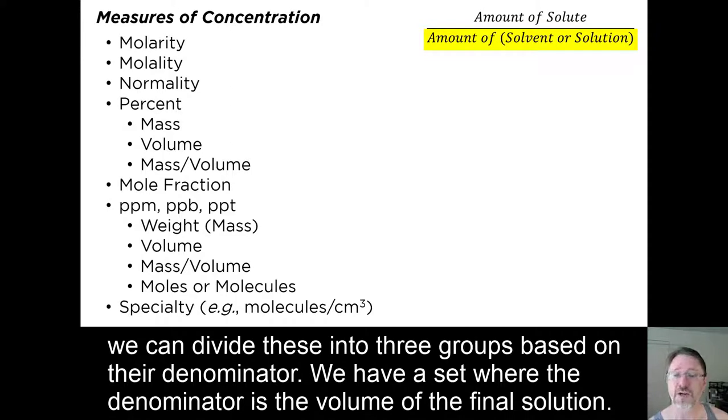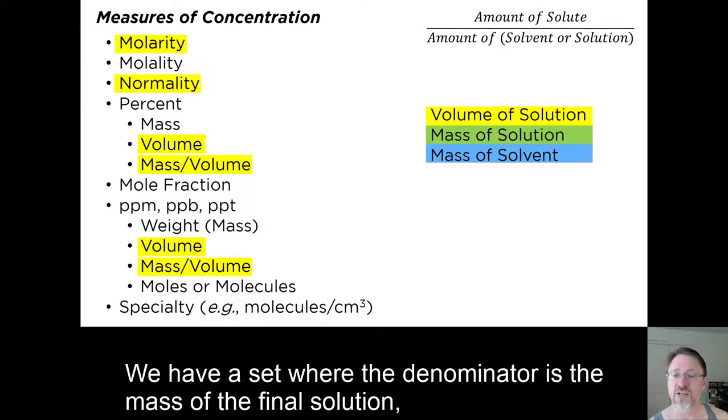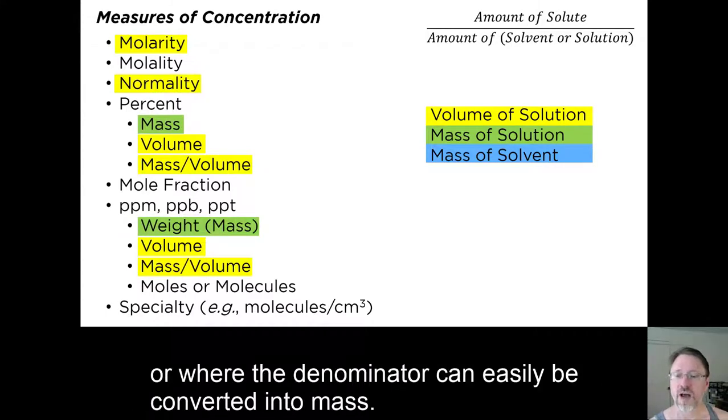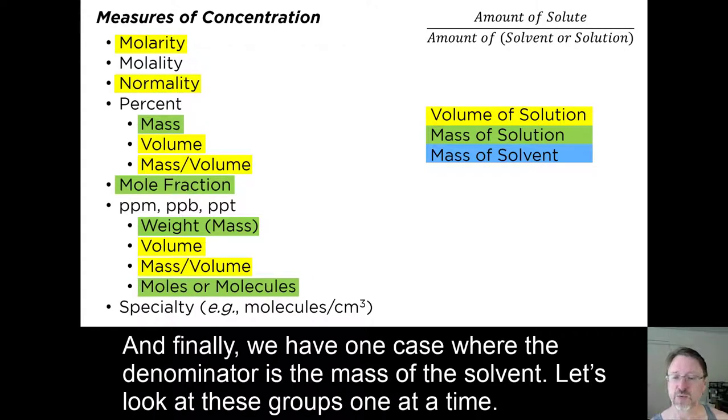We have a set where the denominator is the volume of the final solution, we have a set where the denominator is the mass of the final solution or where the denominator can be easily converted into mass, and finally we have one case where the denominator is the mass of the solvent. Let's look at these three groups one at a time.